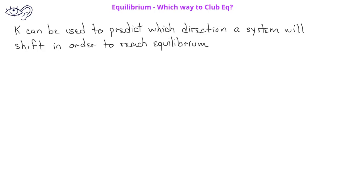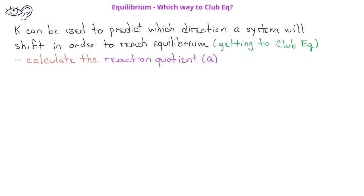Now that we've learned how to calculate the value of the equilibrium constant, we can use equilibrium constants in a few different ways. One way is to help us predict which direction a reaction will go in order to reach equilibrium — will it go from right to left, from products to reactants, or will it shift from left to right, from reactants to form more products?